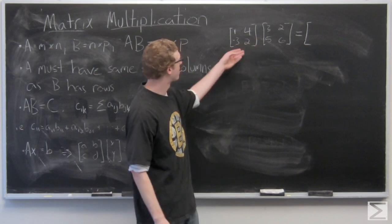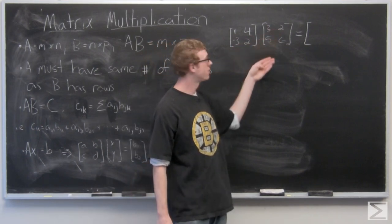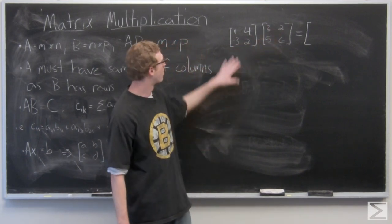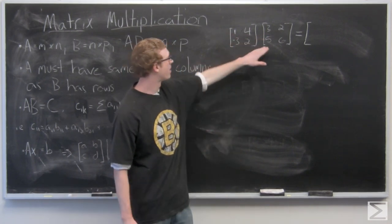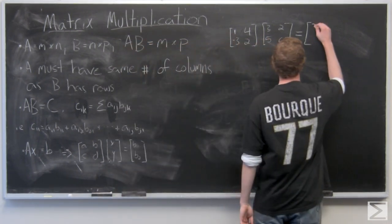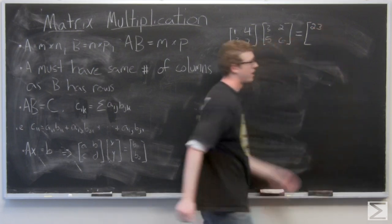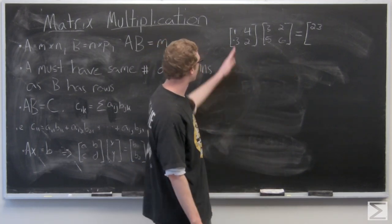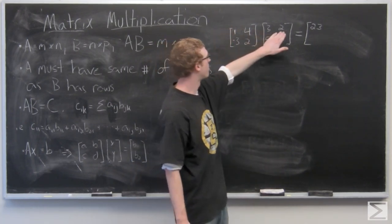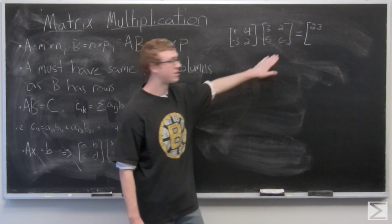So we have a matrix 1, 4, negative 3, 2, and a matrix 3, 2, 5, 6. Now we're going to multiply 1 times 3 and add 4 times 5. And that's our entry in the first position. Now we want our entry in the second position. So we're going to multiply 1 times 2 and 4 times 6.